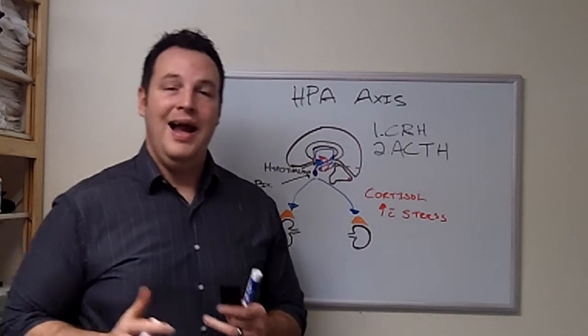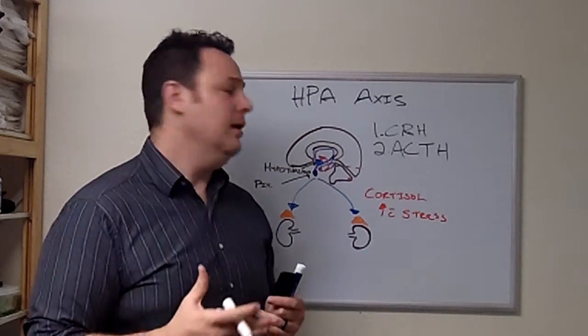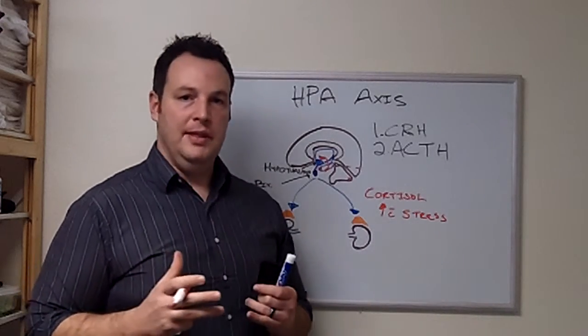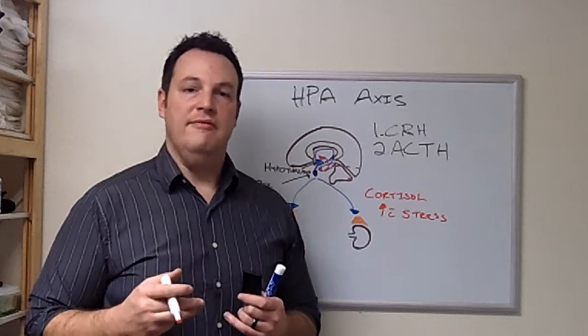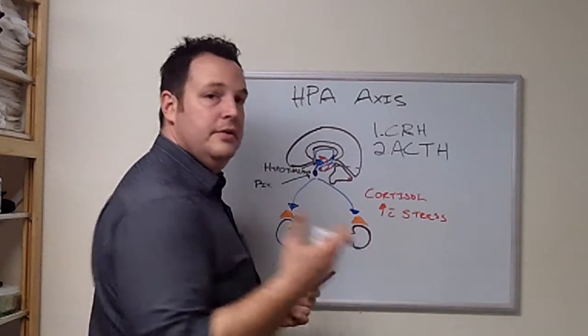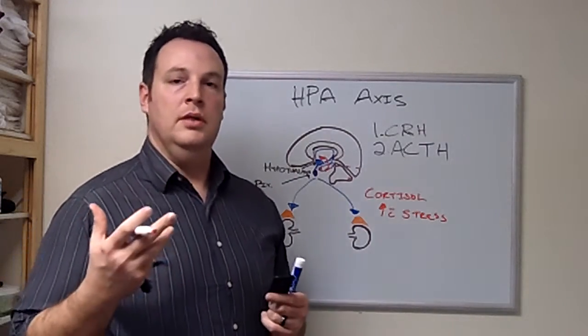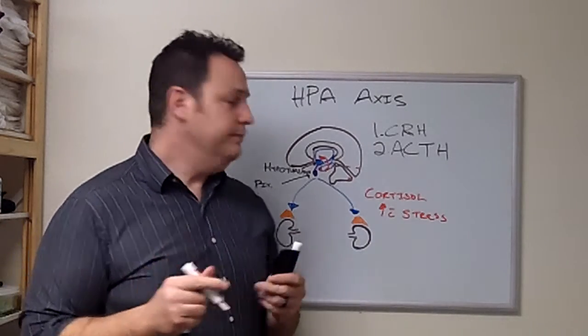When is cortisol being produced? Any time of stress. Cortisol is increased with stress. The biggest stressor on the body is blood sugar dysregulation. So that's a key part of getting our patients to eat small meals frequently throughout the day and to make sure we're getting adequate protein and fat. That's going to decrease the stress response. Other stressors include environmental, chemical, emotional, and physical.